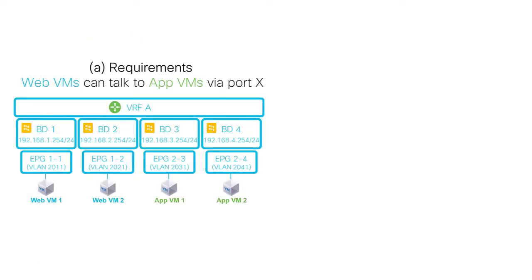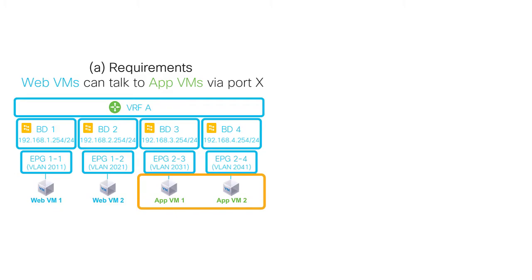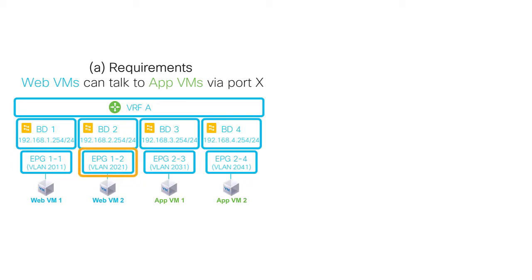Imagine you have web VMs on BD1 and BD2, and app VMs on BD3 and BD4. Even if the web VMs are the same security zone and the app VMs are the same security zone, you would need four EPGs because an EPG is a child of the bridge domain — one EPG for security zone 1 on BD1, one on BD2, one for security zone 2 on BD3, and one on BD4.